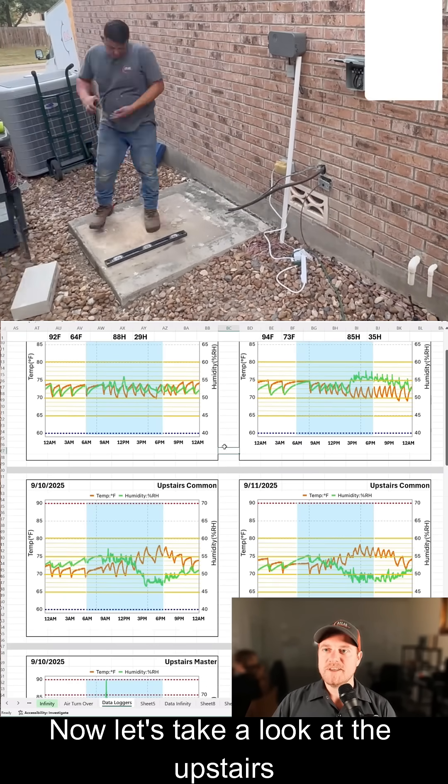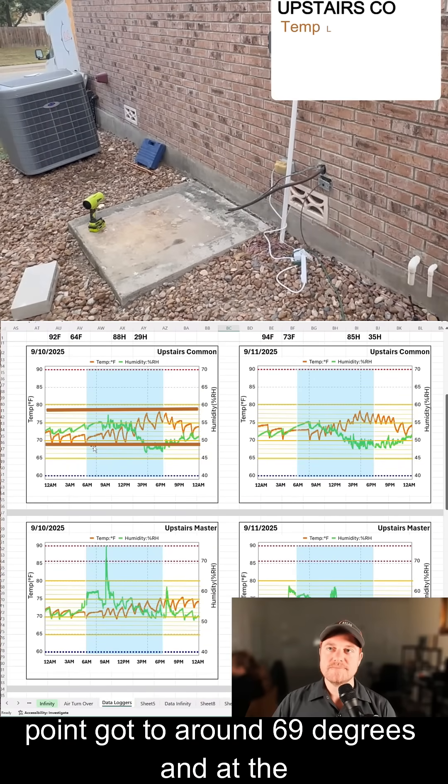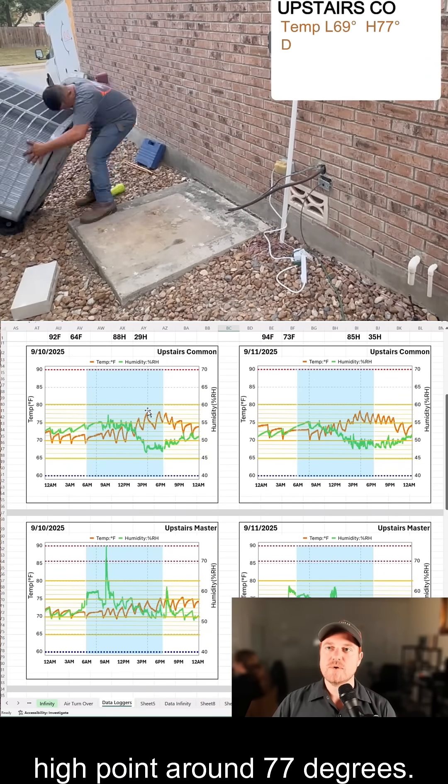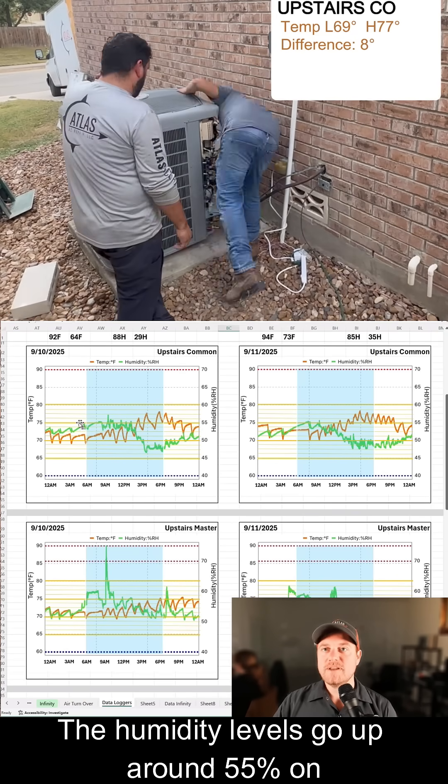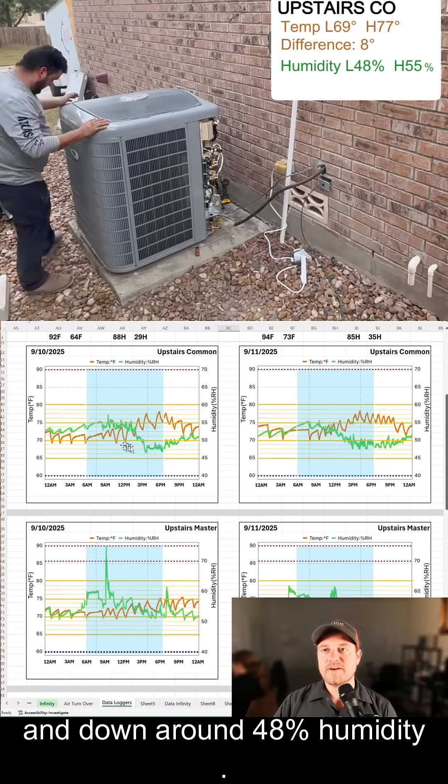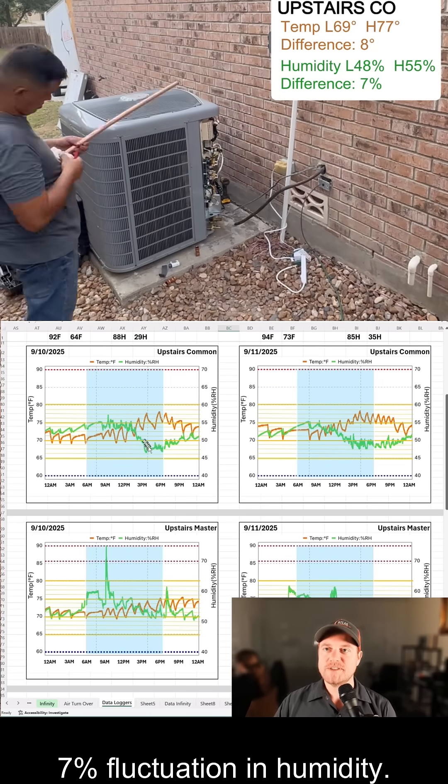Now let's take a look at the upstairs common area. We can see that the lowest temperature point got to around 69 degrees, and at the high point around 77 degrees, so we're looking at around an eight degree swing throughout the day. The humidity levels go up around 55 percent on both days and down around 48 percent humidity, so around a seven percent fluctuation in humidity.